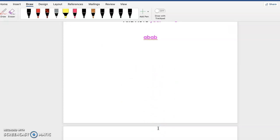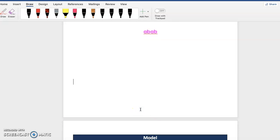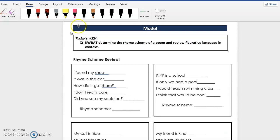Alright, so let's go ahead and put that into practice. So here's the model. I want you guys to do it with me, and I'm going to try to make it as neat as possible with my little pen. I found my shoe. Remember, anytime we start off a stanza, we're going to start it off with the letter A. It was in the car. Car and shoe don't rhyme, so I'm going to give that a B. How did it get there? Hmm, shoe, car, there do not rhyme, so guess what guys, we're continuing in the alphabet and I'm going to give it a new letter, which is C. I don't really care. Hmm, there, care rhymes, so guess what, I'm giving it the same letter, which is C. Did you see my sock too? Hmm, I could see that two and shoe rhyme, and so I'm going to give it the same letter, which is A.